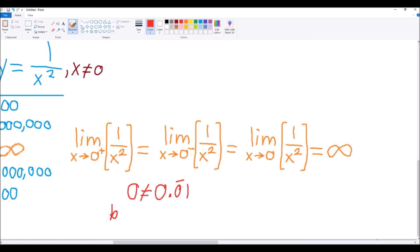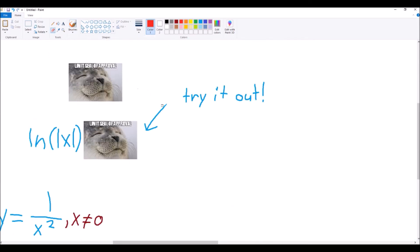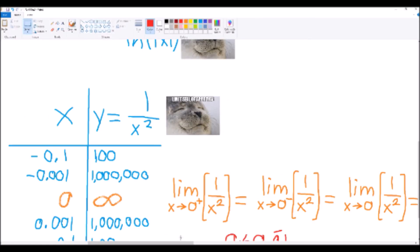This function gets the limit seal of approval, because the difference between 0 and 0.0 repeating 1 is so small that no pencil can pick up on the difference, even though doing this might feel like snowboarding on the event horizon of a black hole. Nonetheless, we've kinda semi-declared that this pencil cannot go to infinity, so it's totally fine.